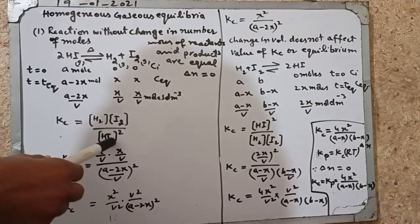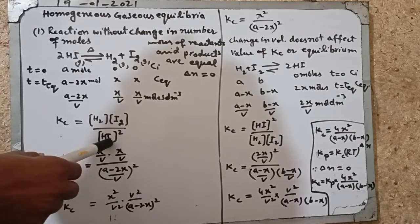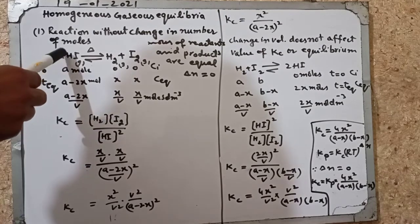Since Kc is equal to product concentration over reactant concentration, H2 concentration multiplied by I2 concentration raised to 2.